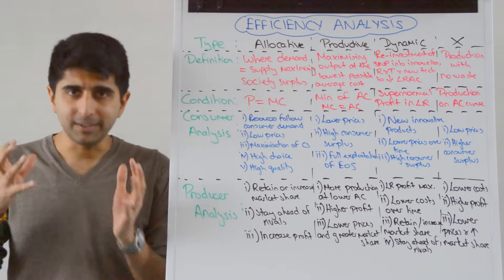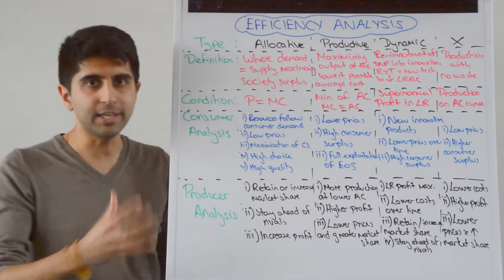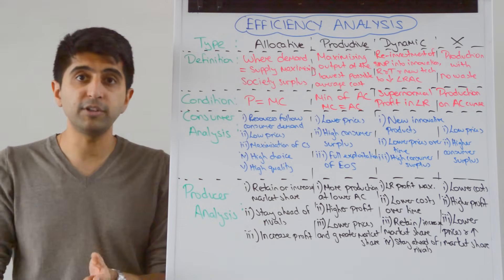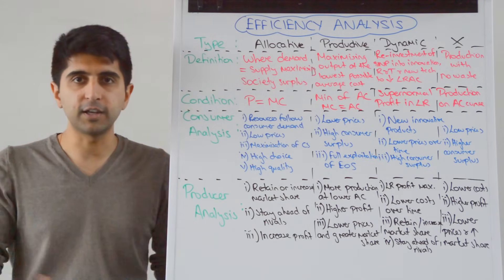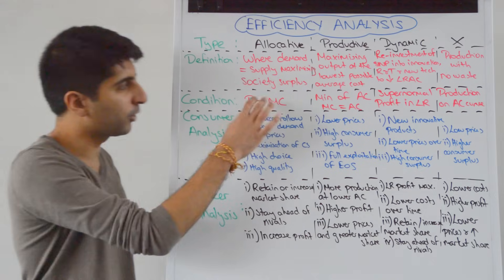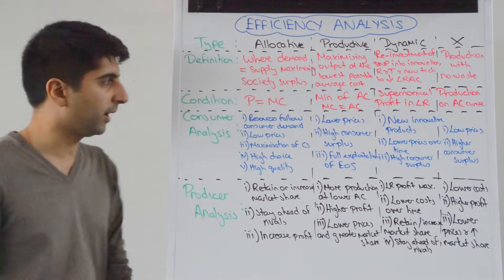That occurs where demand equals supply, and on a business diagram, that is where price equals marginal cost. Price is equal to average revenue, which is equal to demand, and marginal cost is our supply curve. So it is where demand equals supply, but on a business diagram, we can be more formal and say where price equals marginal cost.